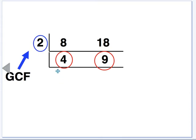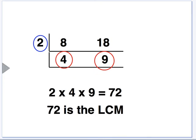How do we find the LCM? Just think about it for a second. You take this number, you multiply by that one, and you multiply by that one. So 2 times 4 times 9, 72. And 72 is the LCM of 8 and 18.